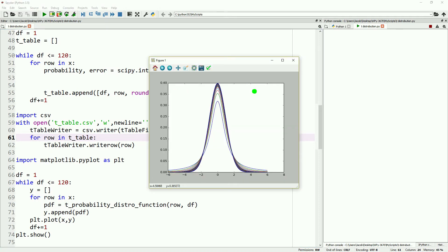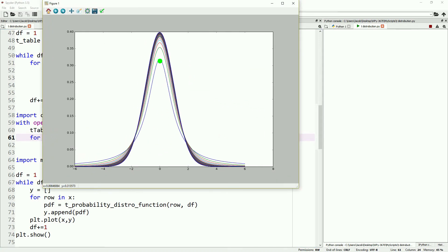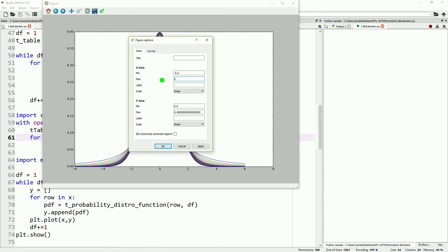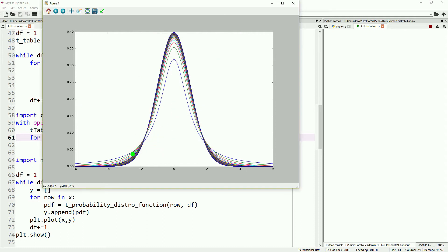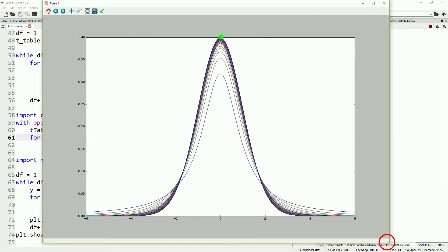Now we should have a graph pop up. There it is. Let's resize this to fit our screen better. Each distribution represents a certain degrees of freedom. You can see as degrees of freedom rises, the t-distribution better and better approximates the standard normal distribution. This is why at large samples you can use a z-test instead of a t-test.